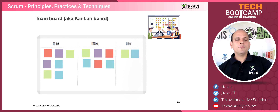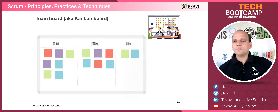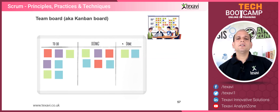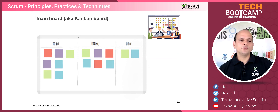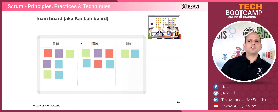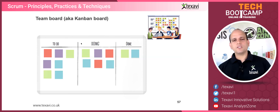This is called a team board. It has columns such as To Do, Doing, and Done — or it could be Analysis, Design, Development. It could have ten or more columns: Requirements, Analysis, Architecture, Design, Development, Testing, Testing Complete, Deployed, and so on. There's no limitation on the number of columns. It depends on what you put in those columns.